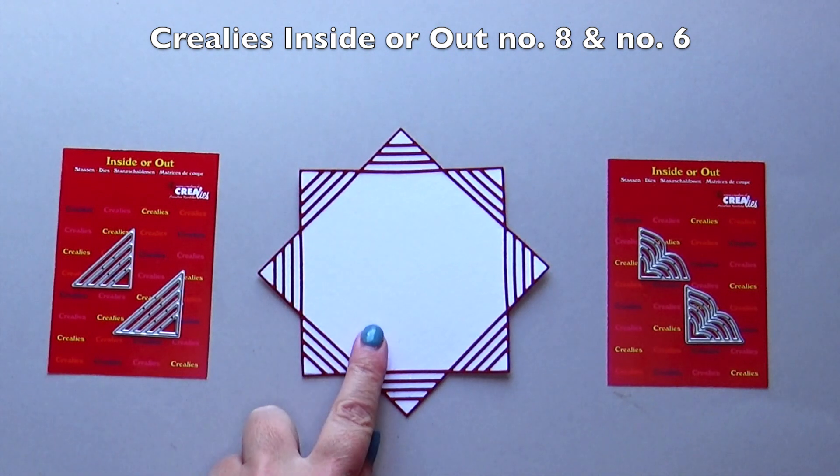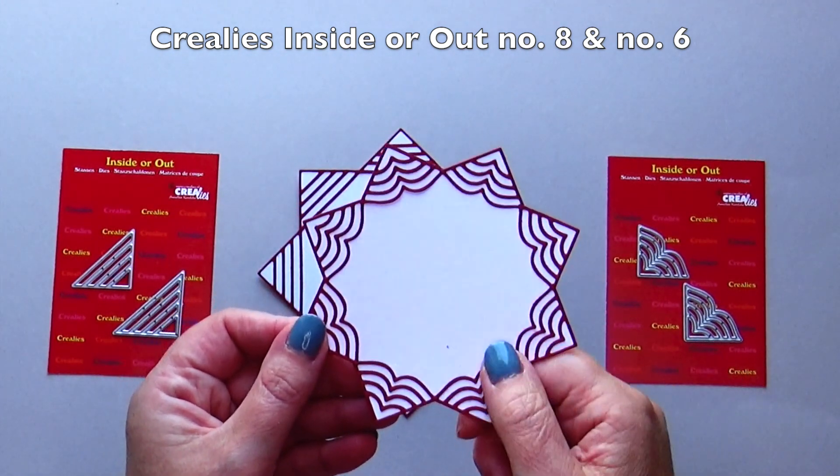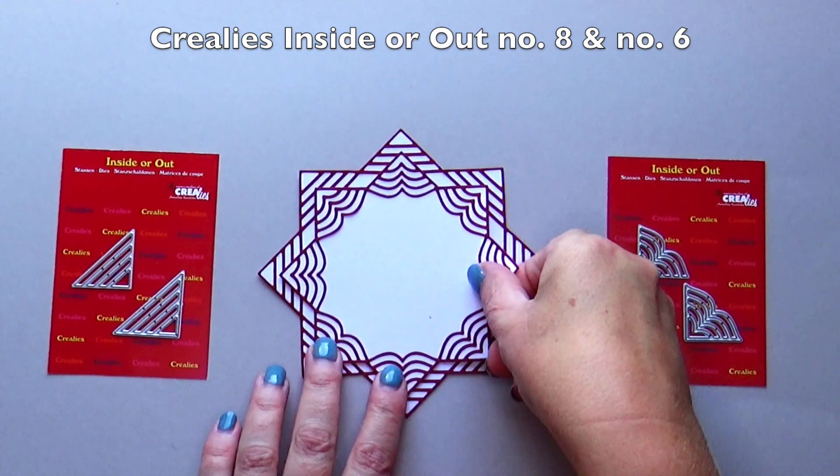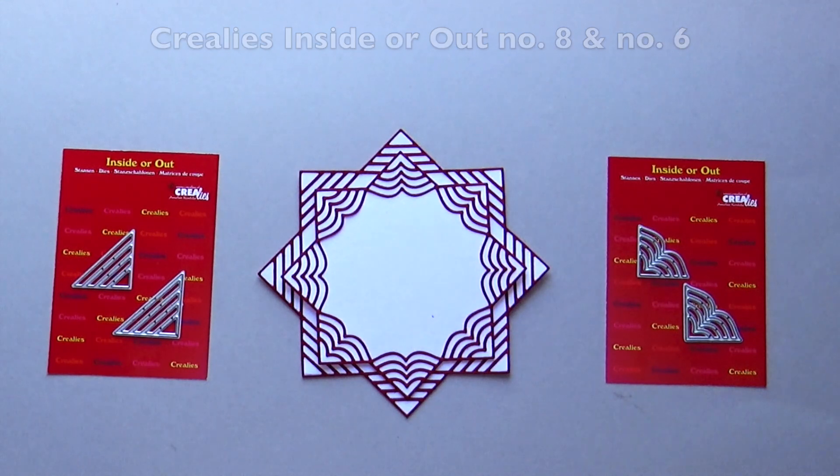Vary with the Crealies inside or out corners. Use different colors of cardstock and use different Crea-Nest-Lies XXL die sets to form the base card.